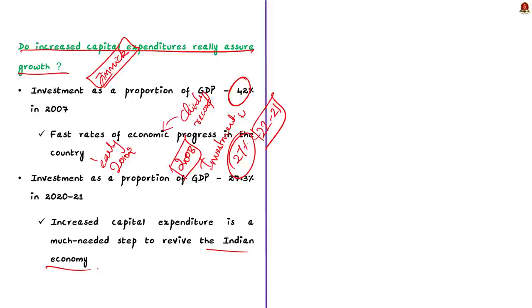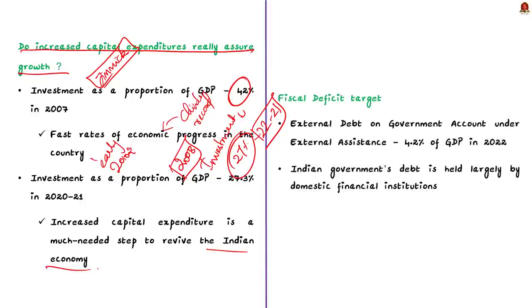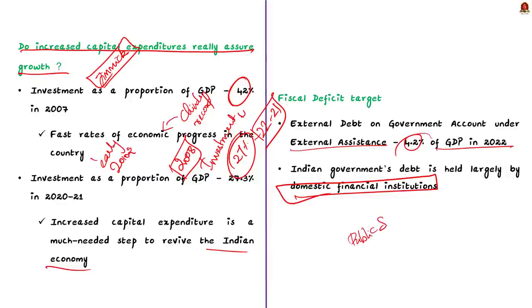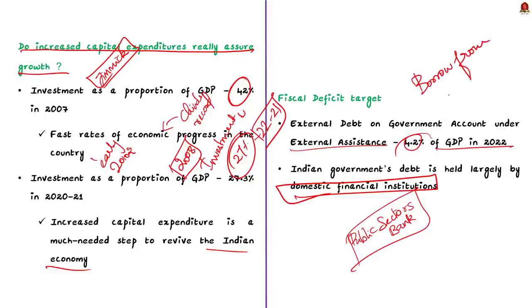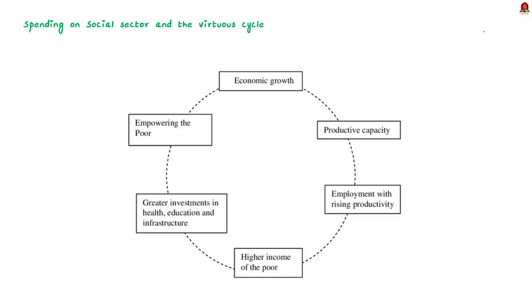The author questions the need to reduce spending on social sectors, saying the government's fear of fiscal deficit is unwarranted. He argues this because only a small portion of India's public debt is owed to external agencies — just 4.2% of GDP in 2022 — posing no real threat. India's government debt is largely held by domestic financial institutions like public sector banks, which represent people's savings. So if the government borrows from people and spends on the social sector, it is spending on the welfare of its own people and setting off a virtuous cycle.